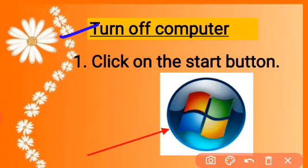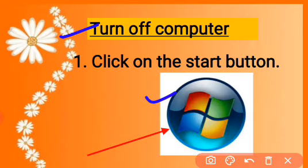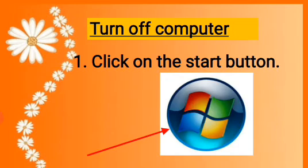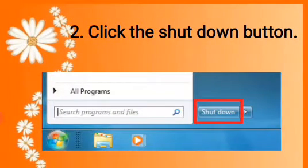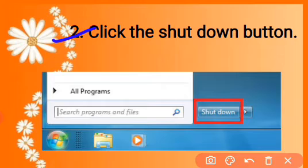Here are the steps to turn off the computer. First, bring the mouse pointer to the Start button and press your left mouse button. A menu will appear. The second step is to click the Shutdown button.